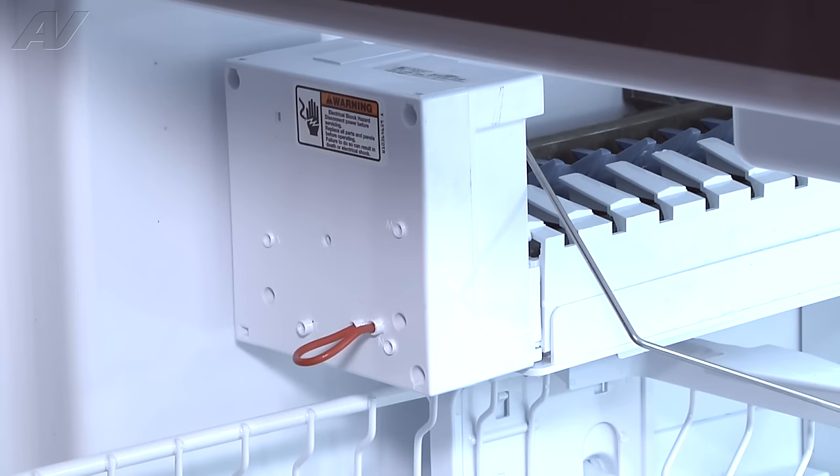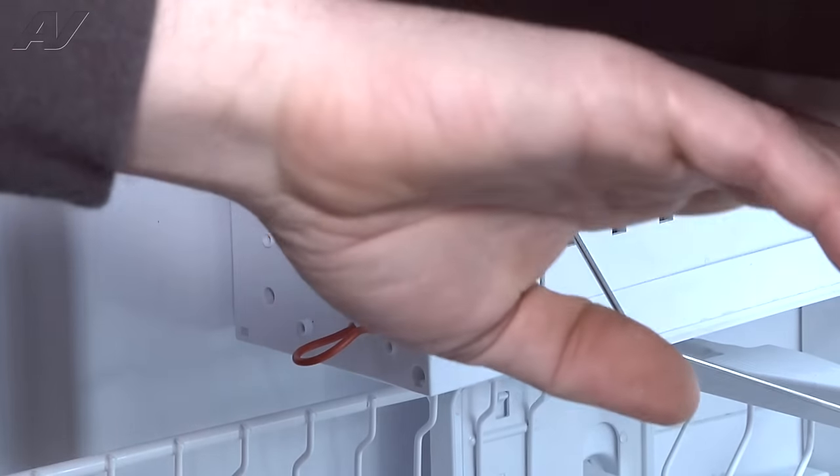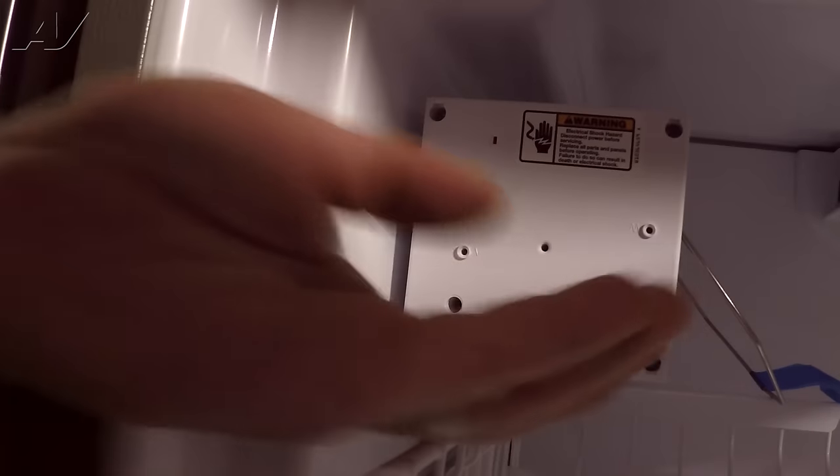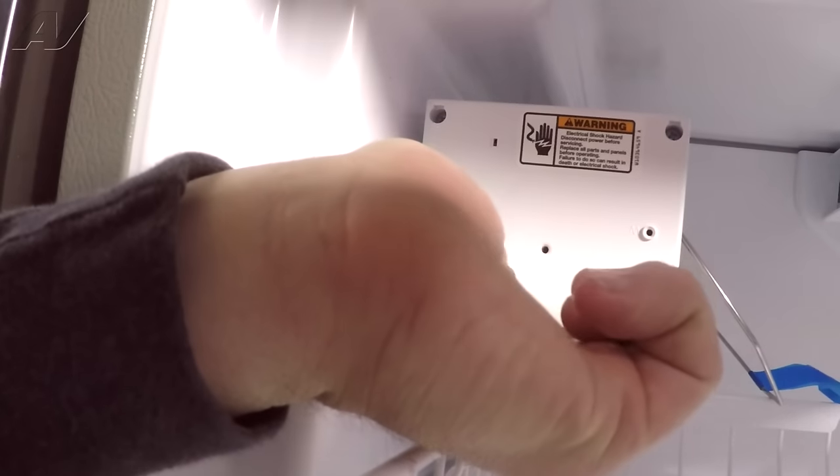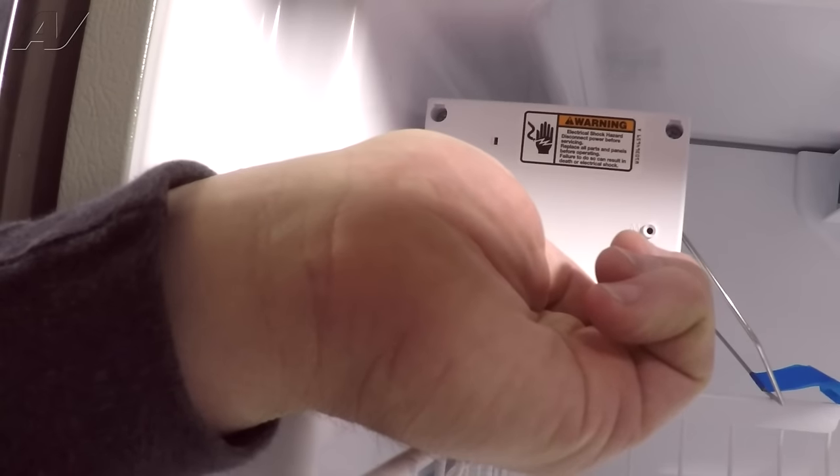On this particular model, we need to have the door switch closed so that it'll run through a cycle. So we'll take a piece of tape and tape the door switch closed. Now, with the door switch closed and the jumper wire in place, the ice maker is going to turn on and start cycling through. You can see the fingers on the ice maker rotating.